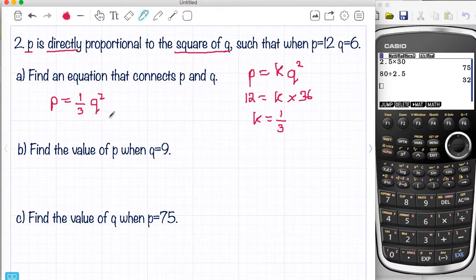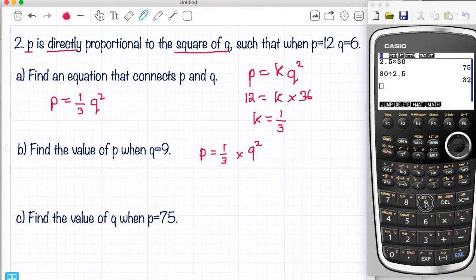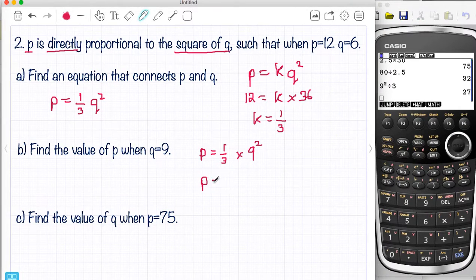Find the value of P when Q is 9. So P equals one-third of 9 squared. The squared is the one that most people will forget in these questions. They'll read it quickly and not understand that they've got to do the square. So this is 27. So when we do it on the calculator.